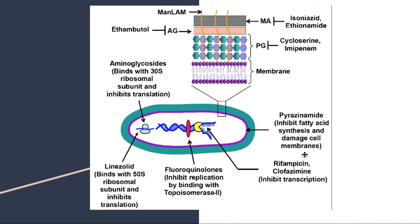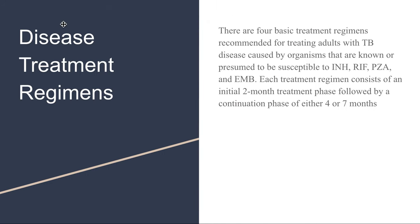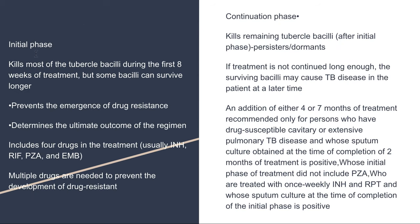To summarize the first-line drugs: isoniazid, ethambutol, pyrazinamide, rifampicin, and streptomycin. The second-line drugs include linezolid, fluoroquinolones, cycloserine, and ethionamide. Regarding treatment regimens, the management of tuberculosis consists of two phases: an initial intensive phase of two months followed by a continuation phase of four to seven months. In the initial phase, the aim is to kill as many tubercle bacilli as possible, making the patient's sputum negative, using four-drug therapy with isoniazid, rifampicin, pyrazinamide, and ethambutol to prevent the development of drug resistance.